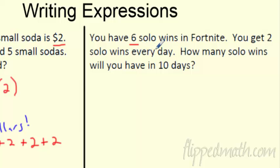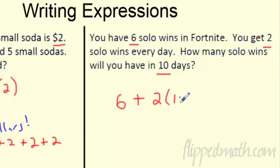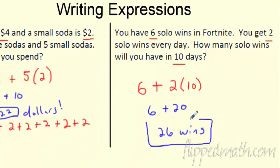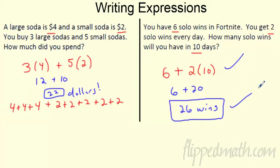Let's say you have 6 solo wins in Fortnite and you get 2 wins every day. How many solo wins will you have in 10 days? You start with 6 wins, plus 2 wins per day for 10 days: the expression is 6 plus 2 times 10. Cleaning it up: 2 times 10 is 20, and 6 plus 20 is 26 wins. Write the expression, make sure your answer makes sense, and label it.